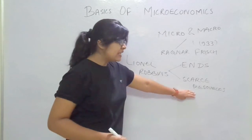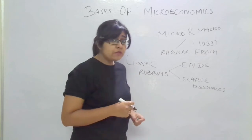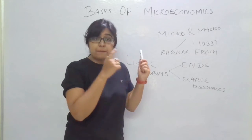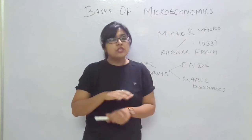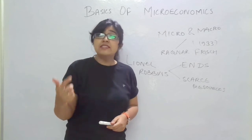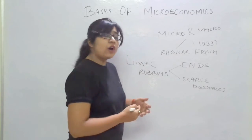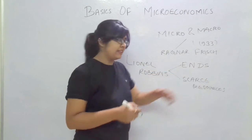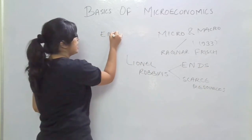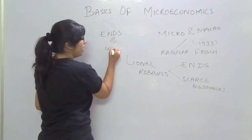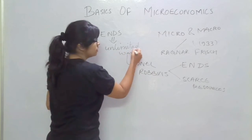And these scarce resources have alternative uses. So from this definition, Lord Robbins wants to suggest that economics is in fact a science which studies human behavior, which is quite dynamic in nature, as a relationship between ends and scarce resources. Now these ends — what are these ends exactly? These ends are the unlimited wants.